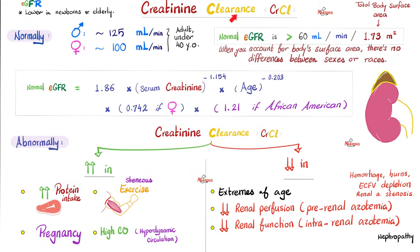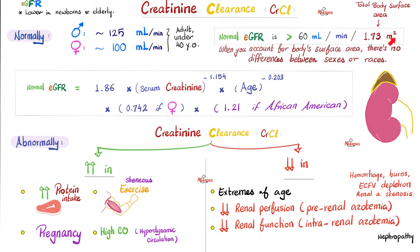What's the normal creatinine clearance — i.e., the normal GFR? For adults under 40, males it's about 125 ml per minute; females it's about 100. Why higher in males? Because they have higher muscle mass on average due to testosterone. Newborns have lower GFR because of low muscle mass. The elderly have lower GFR than adults because of their relatively poor kidney function. The universal normal EGFR is anything more than 60 ml per minute per 1.73 square meters of body surface area.